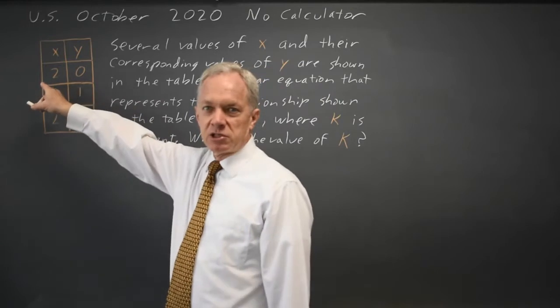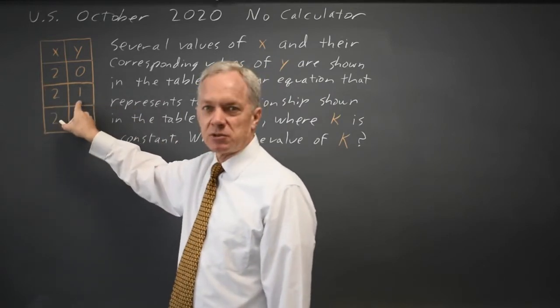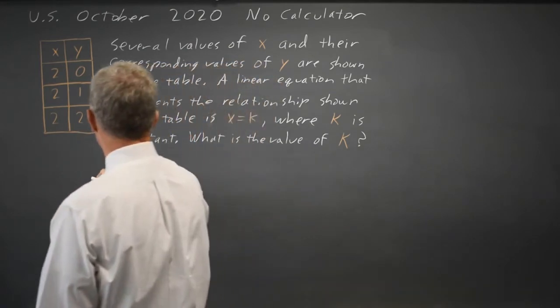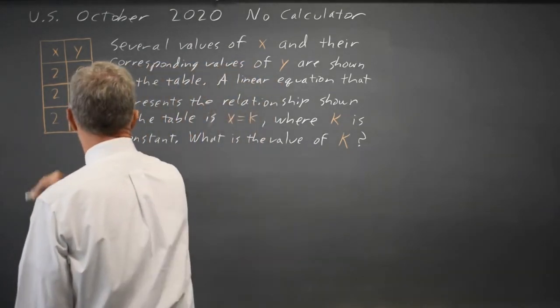When y equals 0, x equals 2. When y equals 1, x equals 2. When y equals 2, x equals 2. In each case, x equals 2, so k equals 2.